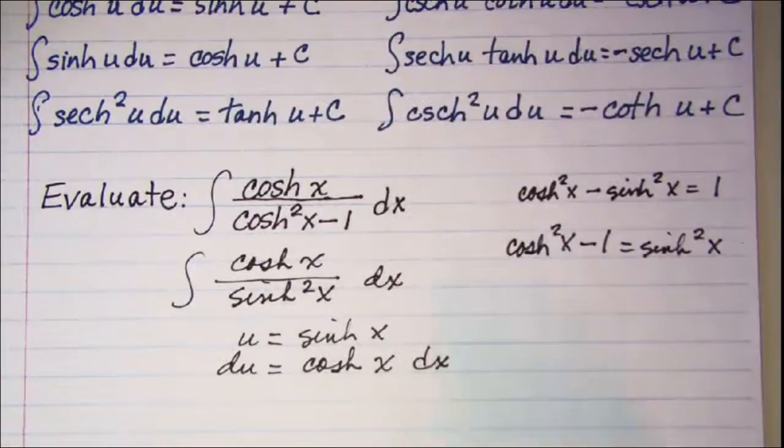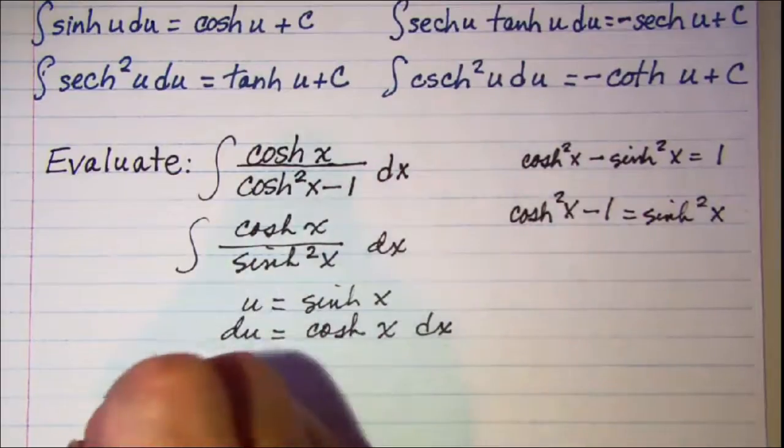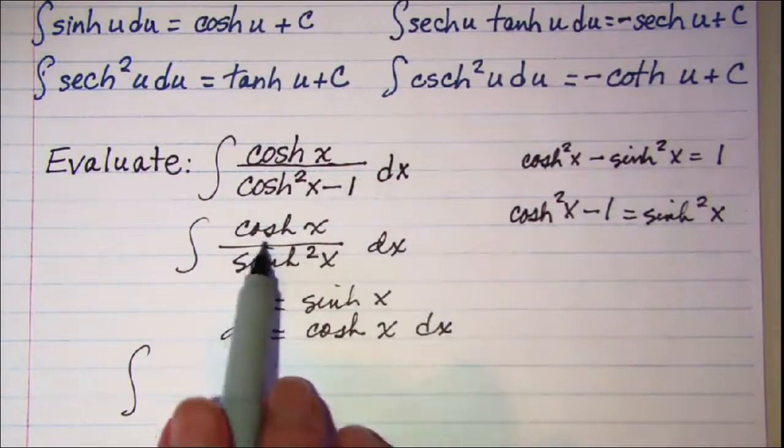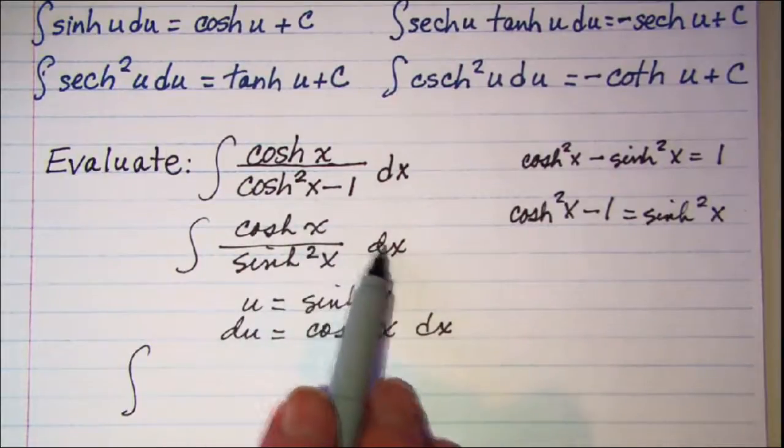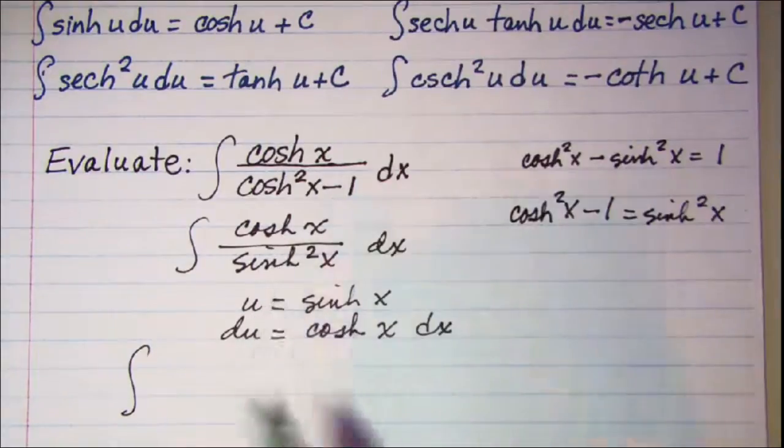So then when I do my u substitution this becomes the integral of my hyperbolic cosine of x dx I am going to replace with du. So I actually have 1 over u squared du.